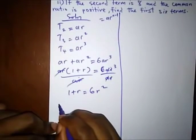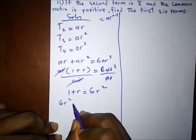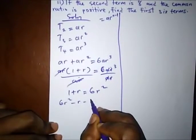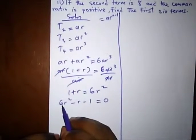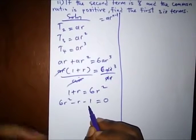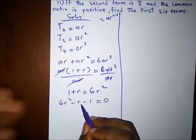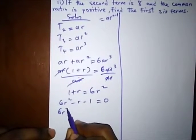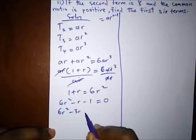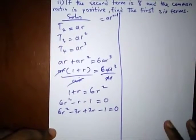So here we have an equation: 6R² minus R minus 1 is equal to 0. For this factorization, we have to look for the common term. 6 times 1 is 6. What factors of 6 would give us minus 1? That's 3 and 2, so it would be minus 3 plus 2.